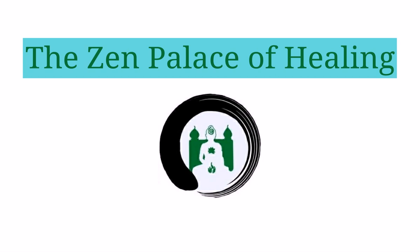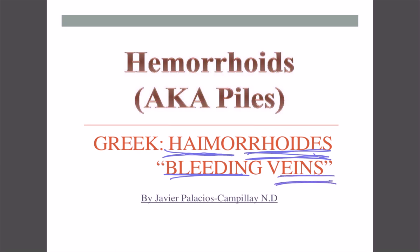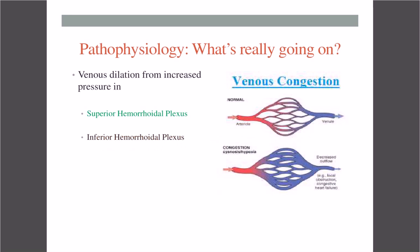Alright, so without further ado let's get started. Hemorrhoids, also known as piles — that's the more common name — actually comes from the Greek 'haimorrhoides.' 'Haimo' means bleeding and 'roides' means veins, so that's where the actual definition of hemorrhoids comes from. Just a little fun fact.